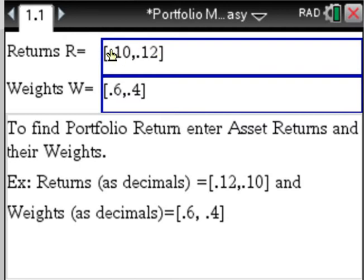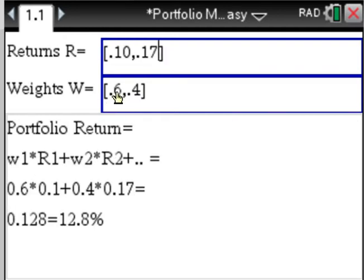Portfolio return: enter the returns of the assets in your portfolio, change them and their weights. Down here, sixty percent, forty percent, and the portfolio return will show right here. If you add more assets and their weights, the portfolio return will change. Weights have to add up to a hundred percent.